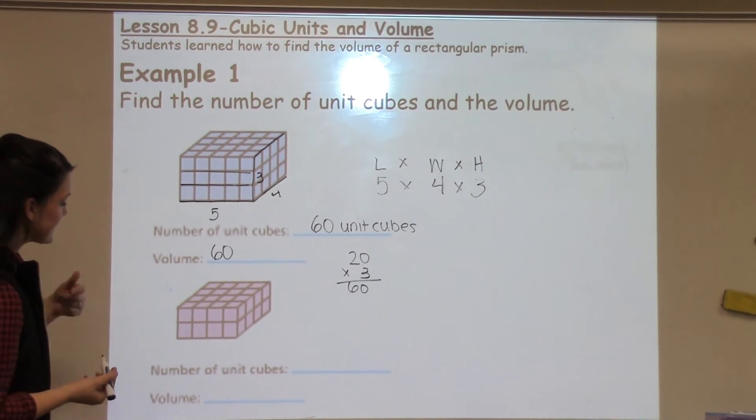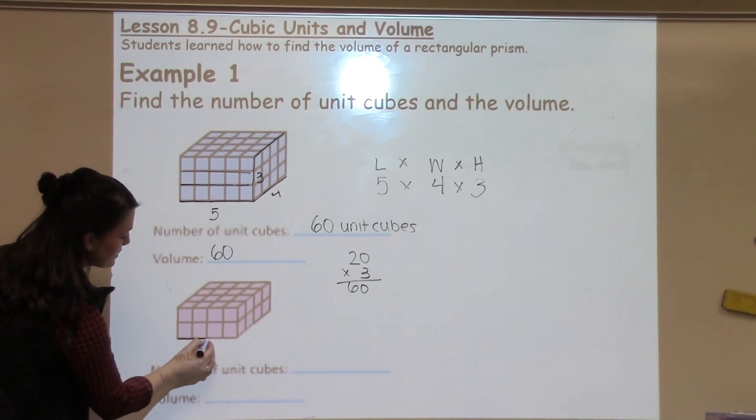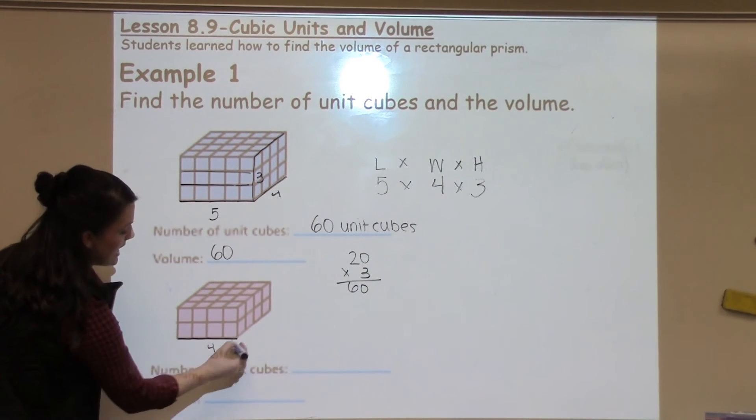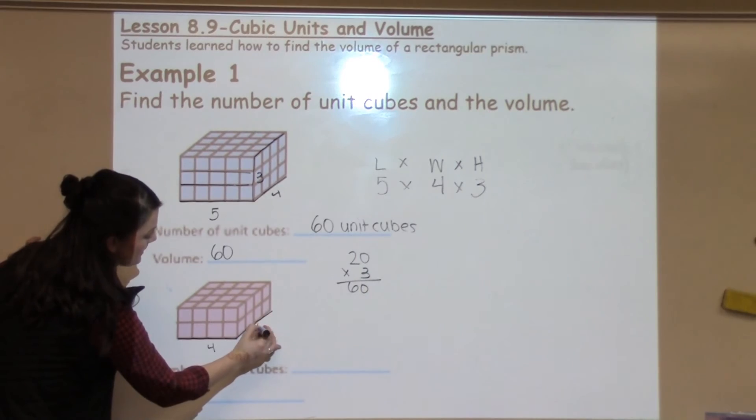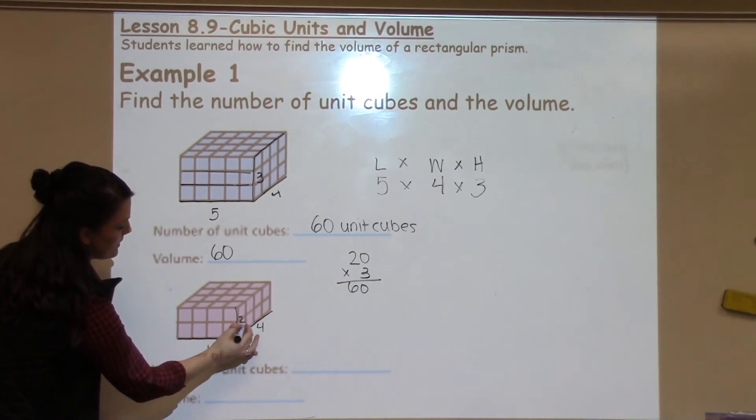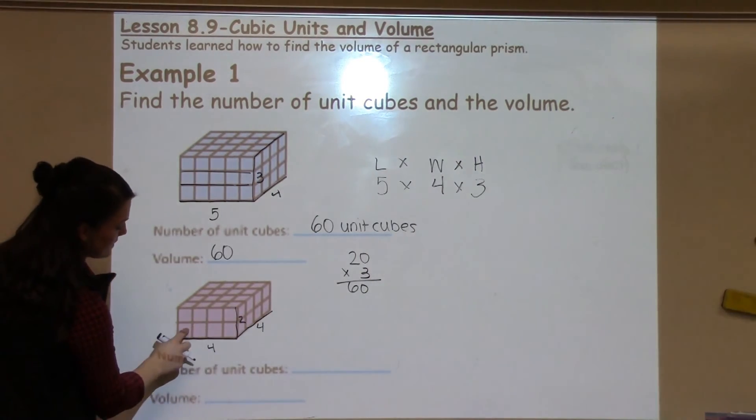So here, let's go ahead and analyze the second shape. I've got 4 unit cubes going across, I have 4 unit cubes going back, and I have 2 unit cubes going up.